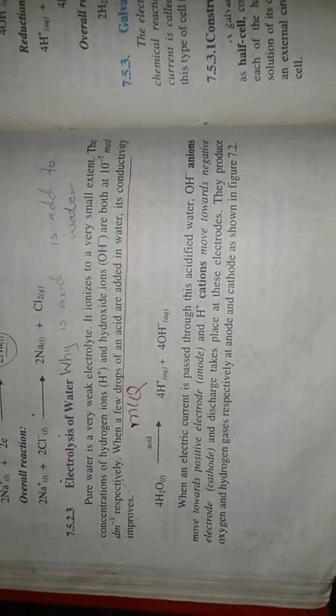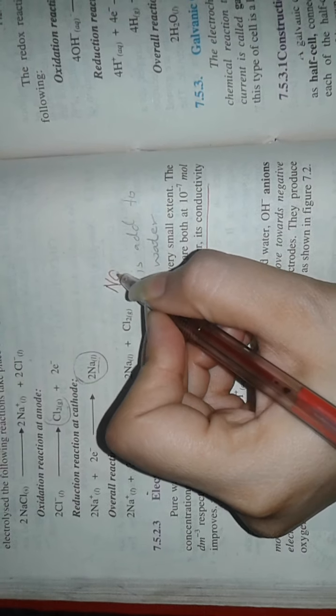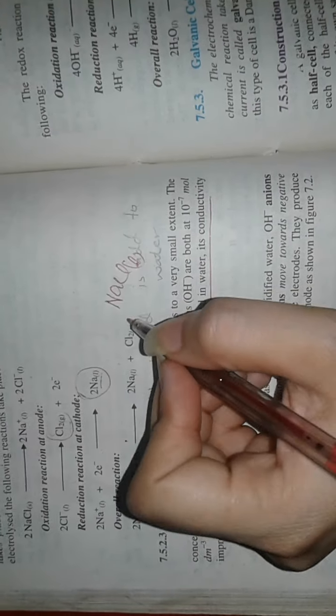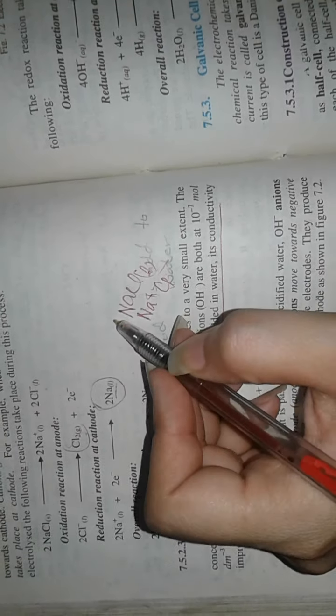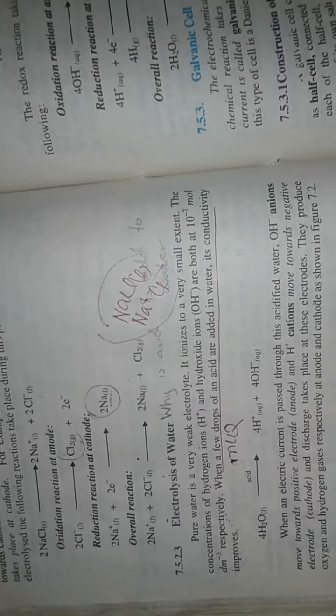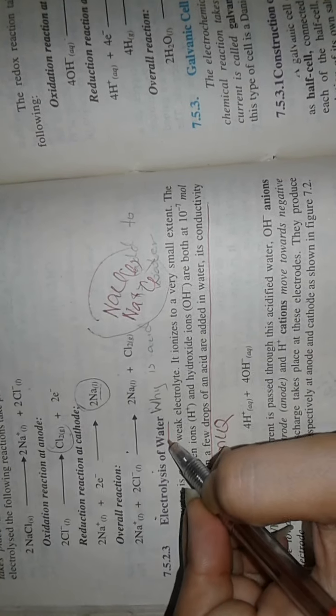For example, we discussed sodium chloride. If we take salt and dissolve it in water, it will change into sodium positive and chloride negative ions. This process is called electrolysis. Now we are moving towards the electrolysis of water.